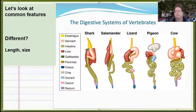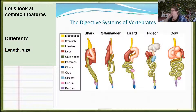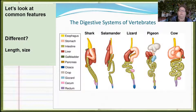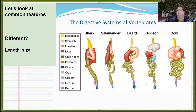They all have an esophagus, a stomach, an intestine, a gallbladder, and a pancreas. Some of the things they don't all share: the cow doesn't have a cloaca, only the pigeon has a crop and gizzard, and while many have a cecum we don't really see one in the salamander. While a cow has a cecum, humans just have the remnant — the appendix.